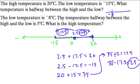here you are at negative 8 degrees. That's the low temperature. So the temperature halfway between the high and the low is 5 degrees. So we're going to go up from negative 8, past 0, all the way up to positive 5. And that's the halfway temperature.